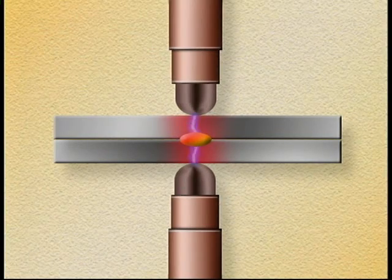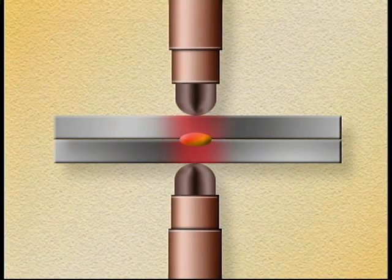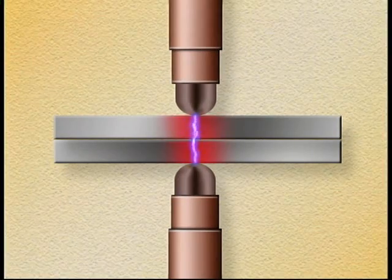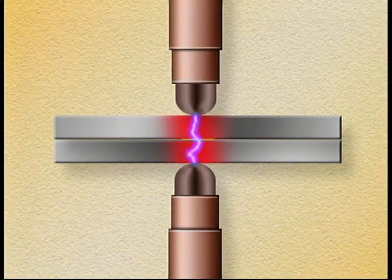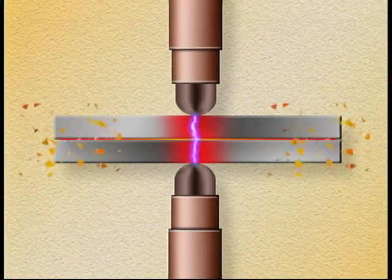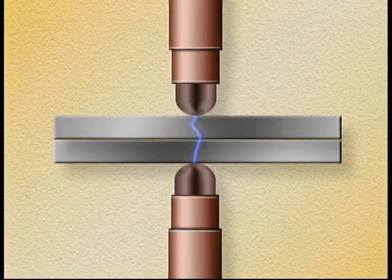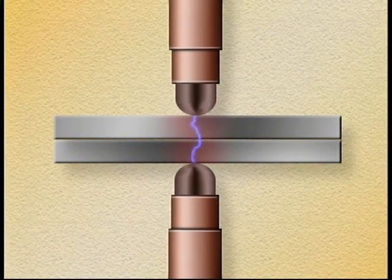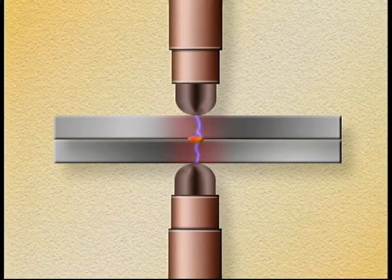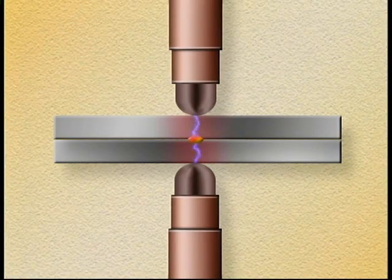To make a good weld, it is imperative that the right amount of heat be produced. If there is too much heat, the metal will melt and eject from the joint, producing a flash. If there is not enough heat, the weld will be undersized or will not form at all, and this is what we call a cold weld.